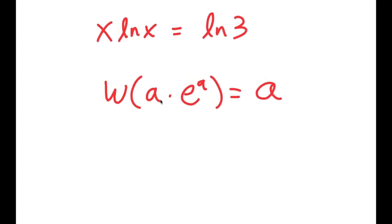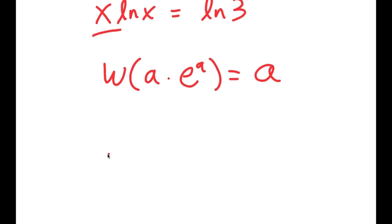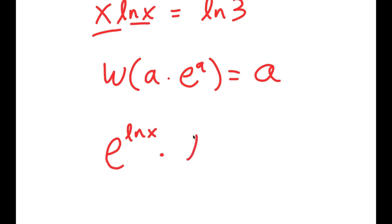I need to rewrite the expression so it fits the Lambert W formula — in the form a times e to the power of a. I'll rewrite x as e to the power of ln x, because e to the power of ln cancels out leaving just x. So x times ln x becomes e to the power of ln x times ln x, which equals ln 3.